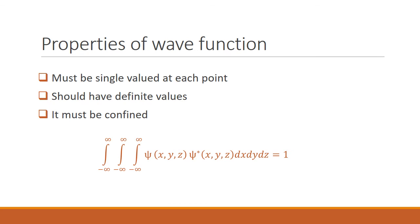Now we will look into some of the properties of the wave function. The first property is that the wave function must be single-valued at each point. Since the wave function is a mathematical function, it cannot have two values for one particular point. A mathematical function has only one y value for one particular x value. Therefore, in matter waves too, you cannot have two values for one single point — each point must have its own single value.